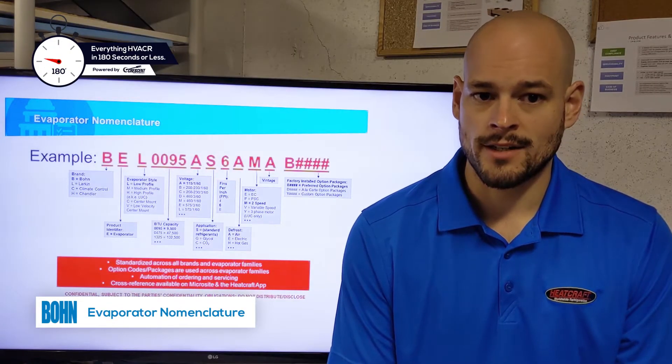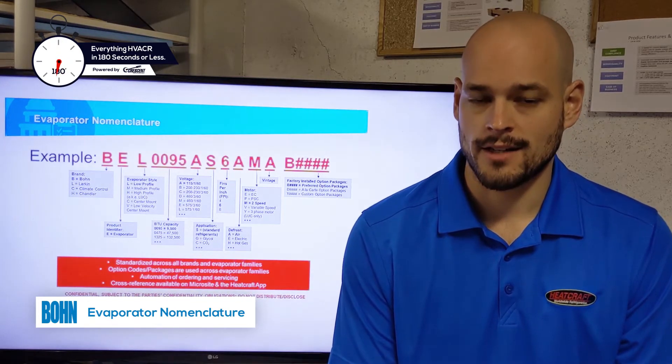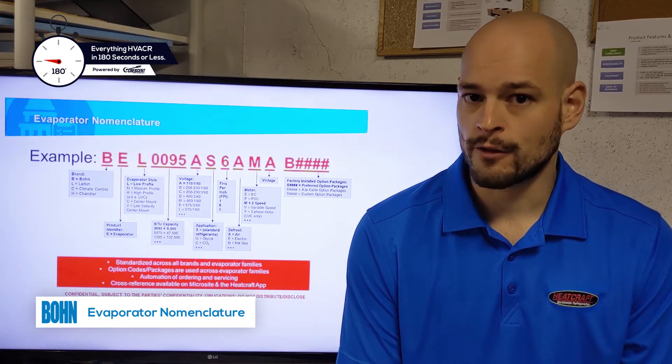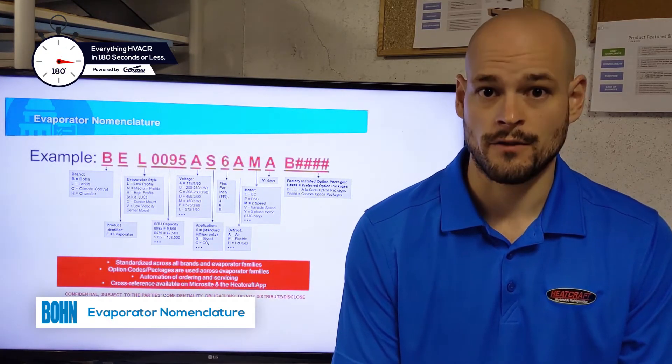The example we're going to look at today is a BEL-0095-AS6AMA. Now that first digit is going to be your brand indicator. It's going to be a B for Bohn, L for Larkin, C for Climate Control, or H for Chandler.